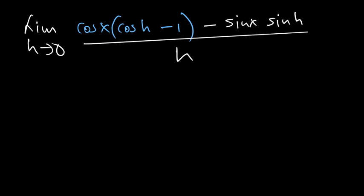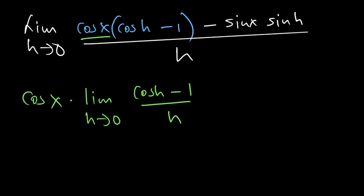We can actually see some identities already. For the first part, I'll pull out the cosine of x and then I'll distribute the limit. So the limit as h approaches 0 for the cosine of h minus 1 divided by h, and then minus this other part. We can also pull out the sine of x which is not having the h, and then multiply by the limit as h approaches 0 for sine of h over the h.